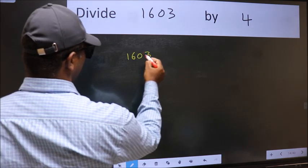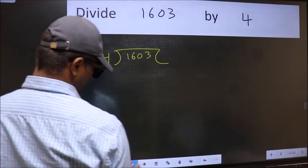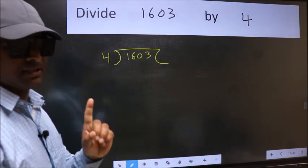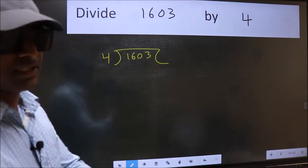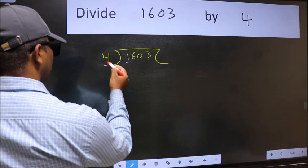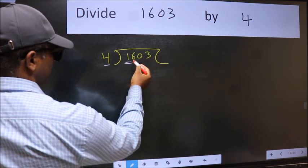1603 and 4 here. This is your step 1. Next, here we have 1 and here 4. 1 is smaller than 4. So, we should take two numbers, 16.